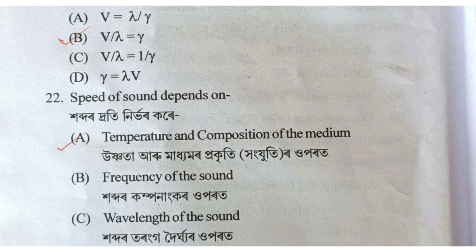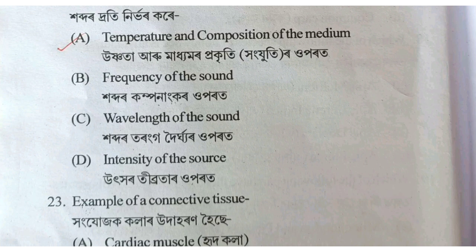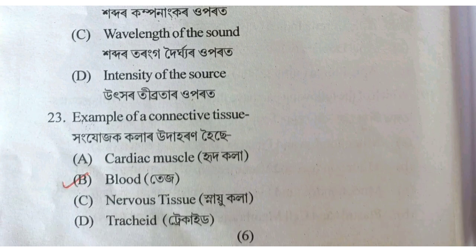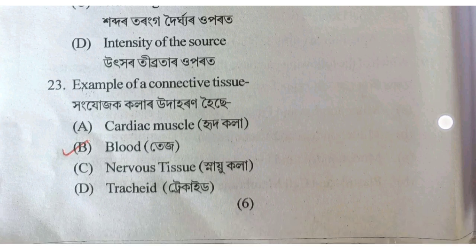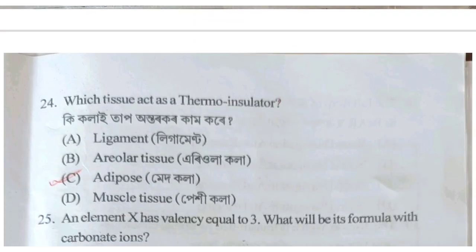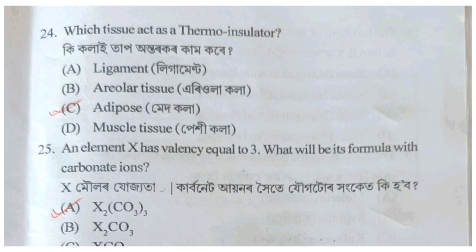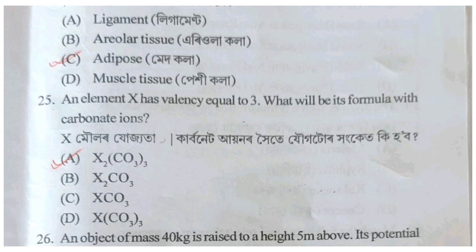The speed of sound depends on — Option A: temperature and composition of the medium. An example of connective tissue — Option B: blood. Which tissue acts as a thermo-insulator? Option C: adipose tissue.